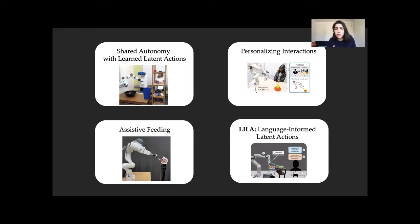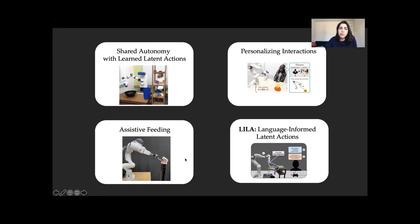The idea we have here is that robot learning can enable an easier and more intuitive control space for assistive teleoperation tasks. Today I'm going to talk about this idea of latent actions — learning latent representations of action spaces to enable a more intuitive control space. Then I'll discuss combining that with more traditional shared autonomy approaches like belief modeling over what the human is trying to do, which enables more precise manipulation tasks.